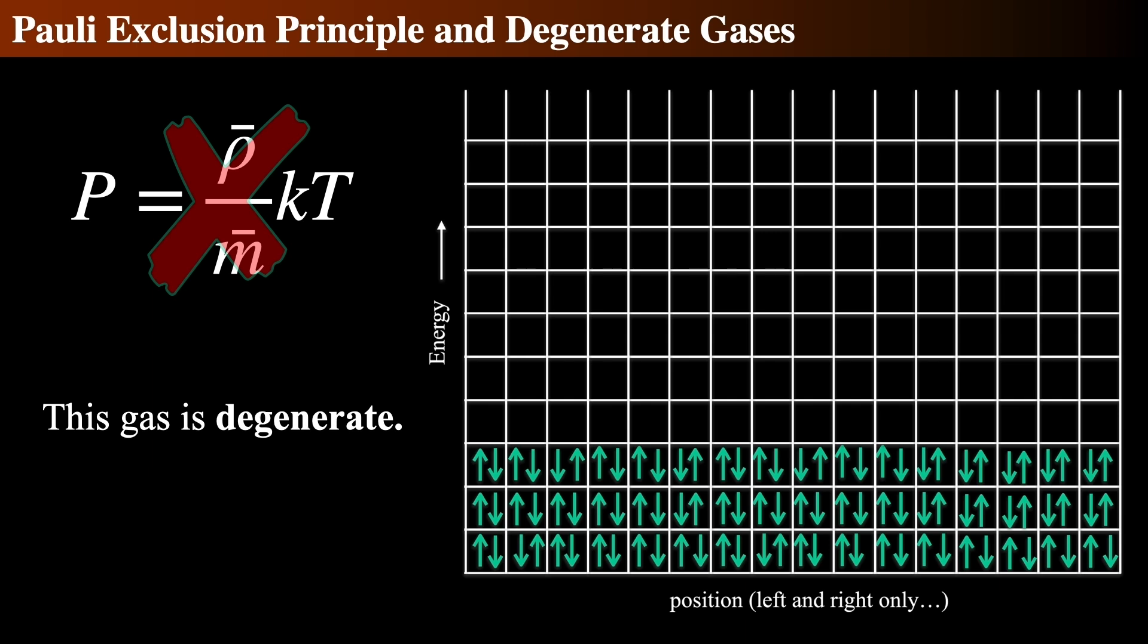At temperature equals zero, none of the higher energy states are filled, and all of the lowest ones are completely filled. And this is what we mean by a degenerate gas, and it most certainly does not behave at all like an ideal gas. And it's not just as if it's extremely cold.